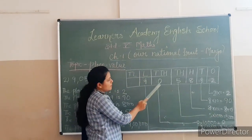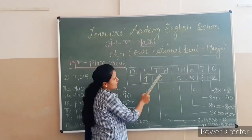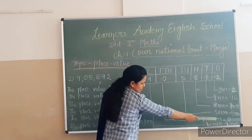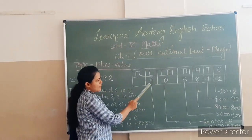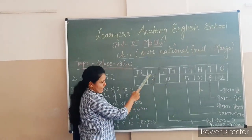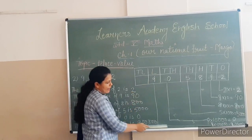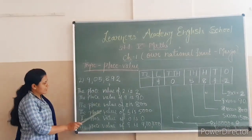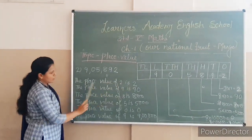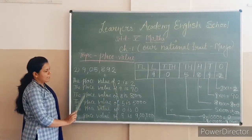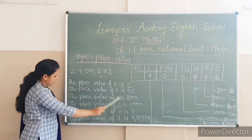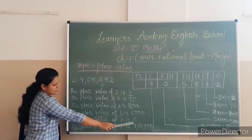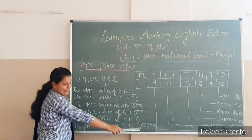The next number is 0, in the position of the 10,000s, so 0 multiplied by 10,000 equals 0. And the next number is 9, in the lakhs position, so 9 multiplied by 1,00,000 equals 9,00,000. So, the place value of 2 is 2, the place value of 9 is 90, the place value of 8 is 800, the place value of 5 is 5000, the place value of 0 is 0, and the place value of 9 is 900.